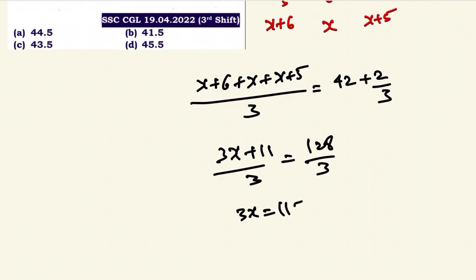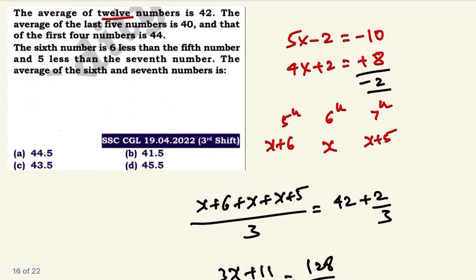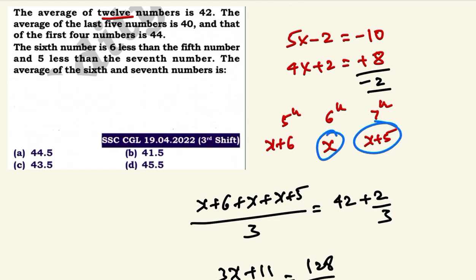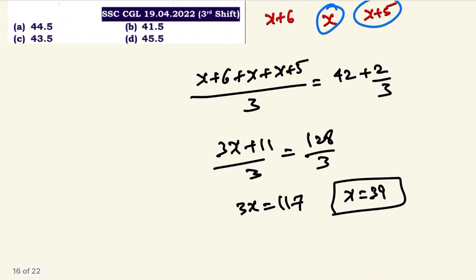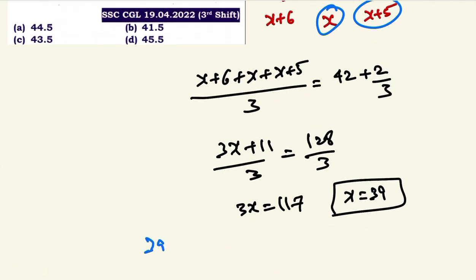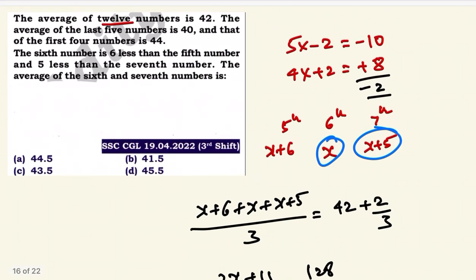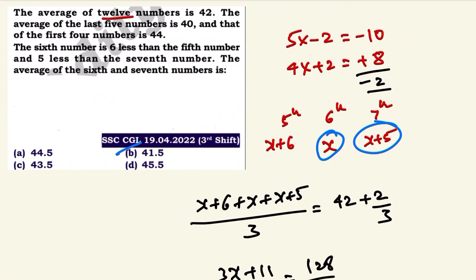So 3x equals 117, therefore x equals 39. The average of the 6th and 7th numbers: 6th number is x equals 39, 7th number is x plus 5 equals 44. So the average is 83 by 2. Option B is the right answer.